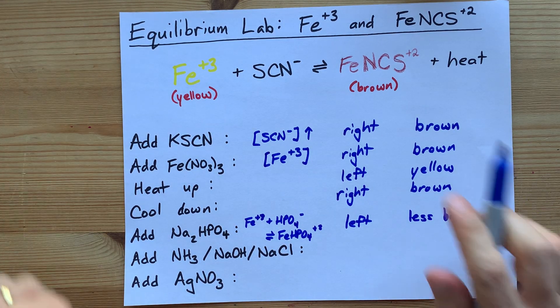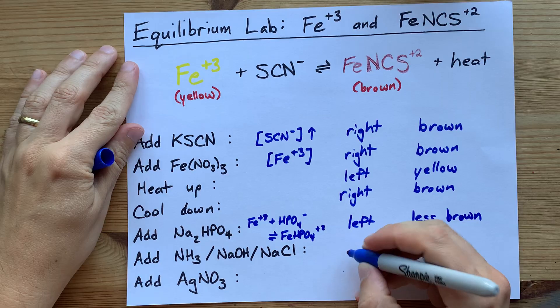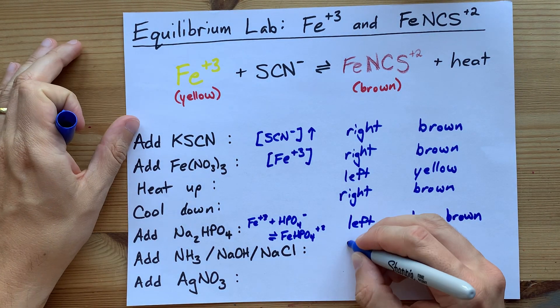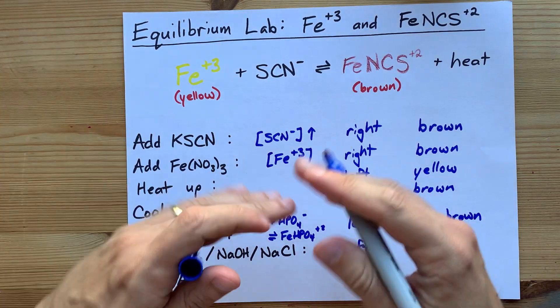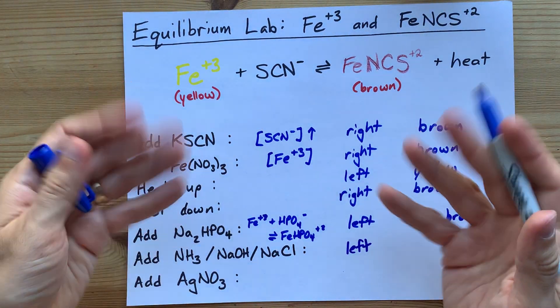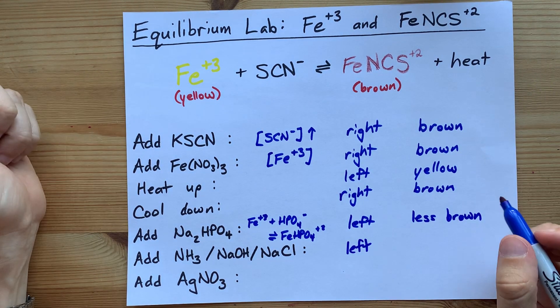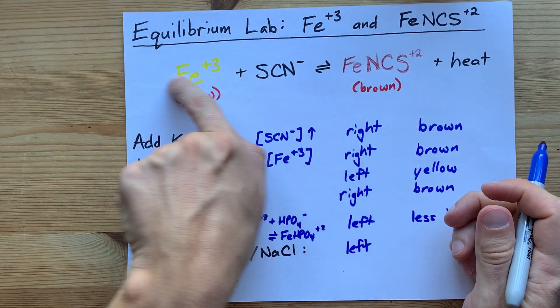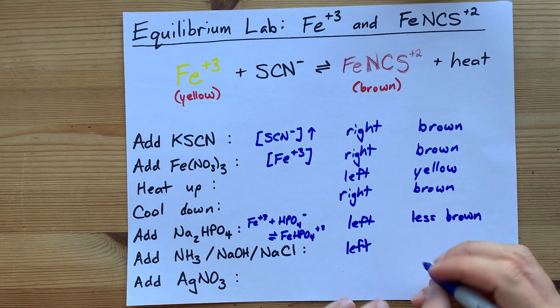Each of those anions can complex with that cation and remove it from this equilibrium consideration. You're not removing it from solution. It's going to have converted into like FeOH3 or FeCl6 or something. But you're going to remove it, and to replace it, the equilibrium must shift left.